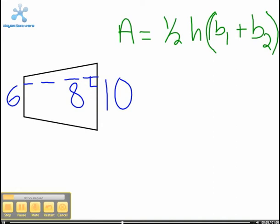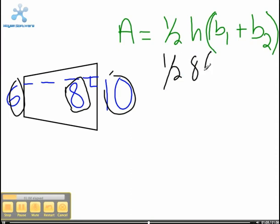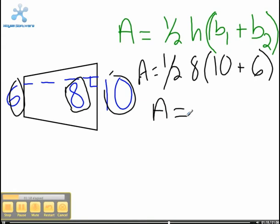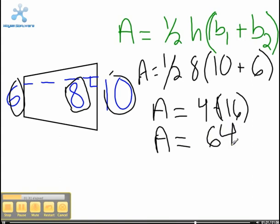And here we have the same thing. Our bases are 6 and 10 and our height is 8. So we substitute those into our formula. So it will be A equals 1/2 times 8 times 10 plus 6. So the area will be 64.